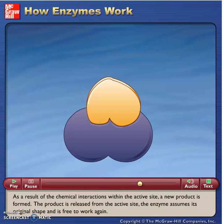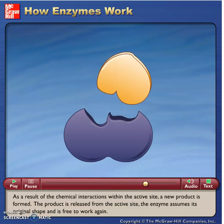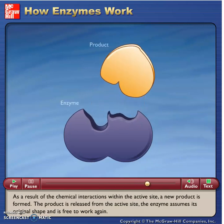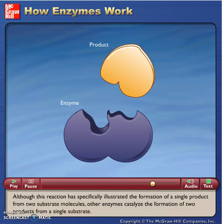The product is released from the active site. The enzyme assumes its original shape and is free to work again. Although this reaction has specifically illustrated the formation of a single product from two substrate molecules, other enzymes catalyze the formation of two products from a single substrate.